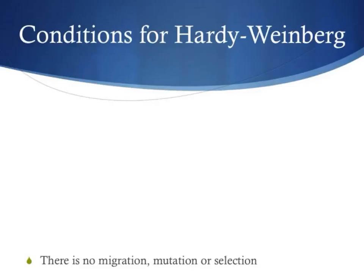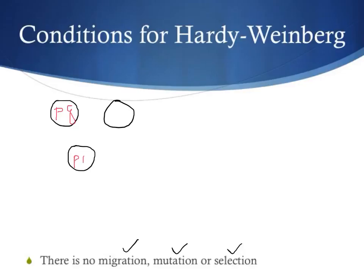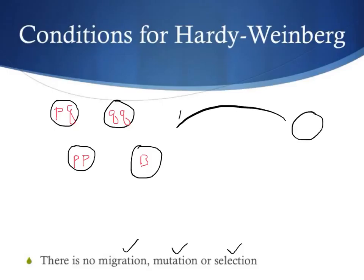The last condition for which the Hardy-Weinberg principle applies is that there has to be no migration, no mutation, or any sort of selection occurring within the population. This is important because the primary use of the Hardy-Weinberg equation is to predict allele frequencies, and if those frequencies are disrupted by a new mutation — a new allele represented by a new letter — or a migration of an outside source disrupting the current gene pool of P's and Q's, even if the allele is one of the existing alleles, it will throw off the prediction for which the Hardy-Weinberg principle is meant to predict.